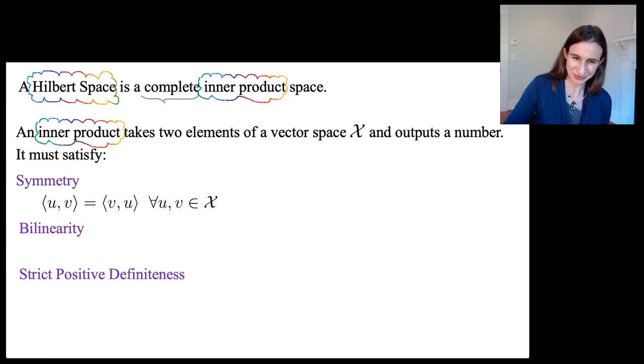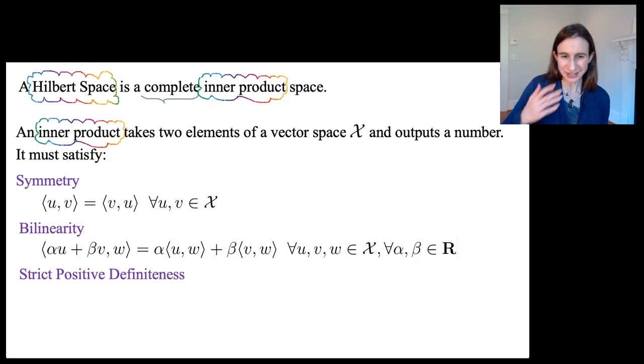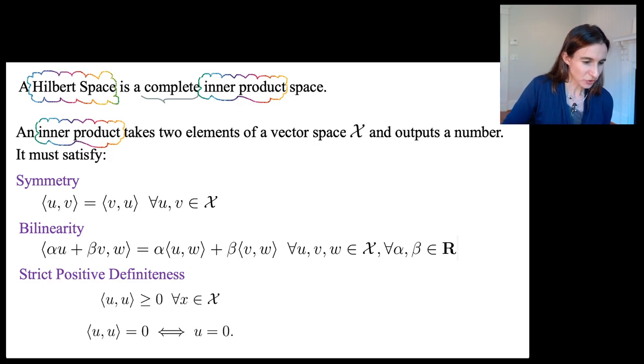Symmetry is obvious, right? You can flip the order of the terms. Bilinearity, also fairly obvious that constants come out and sums come out. Strict positive definiteness makes sure that norms are well defined. If you take the dot product of something with itself, that had better be non-negative or you're in trouble.